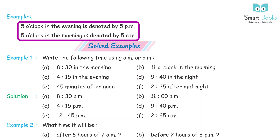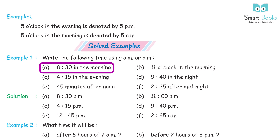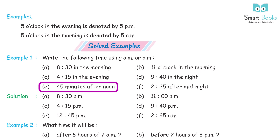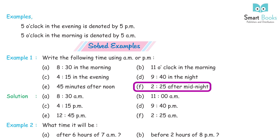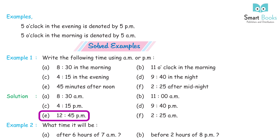Example: 5 o'clock in the evening is 5 PM; 5 o'clock in the morning is 5 AM. Solved Example 1 — Write the following time using AM or PM: A. 8:30 in the morning → 8:30 AM. B. 11 o'clock in the morning → 11 AM. C. 4:15 in the evening → 4:15 PM. D. 9:40 in the night → 9:40 PM. E. 45 minutes after noon → 12:45 PM. F. 2:25 after midnight → 2:25 AM.